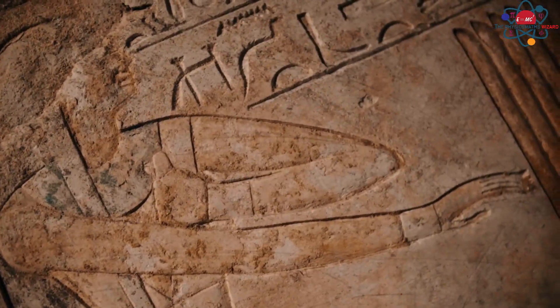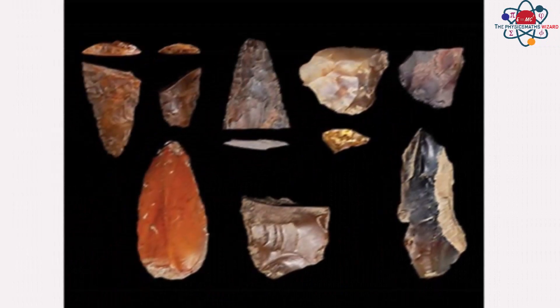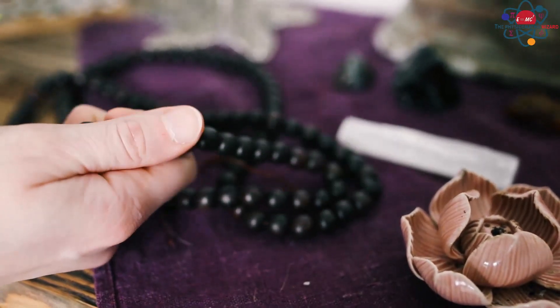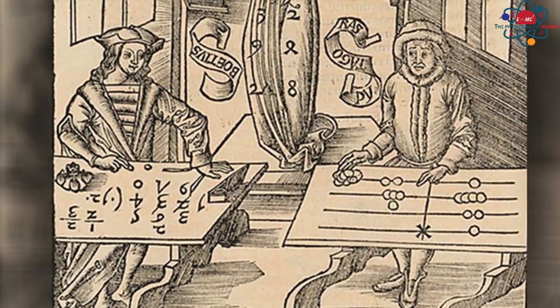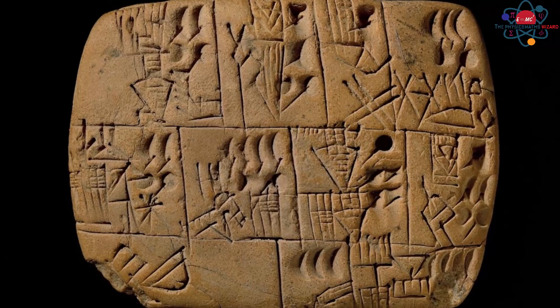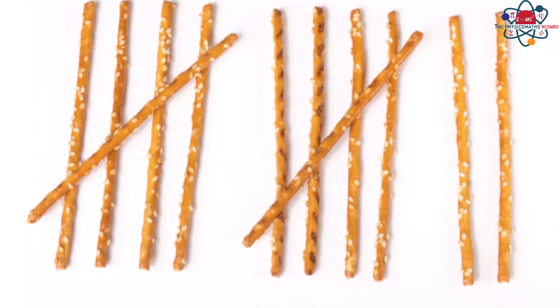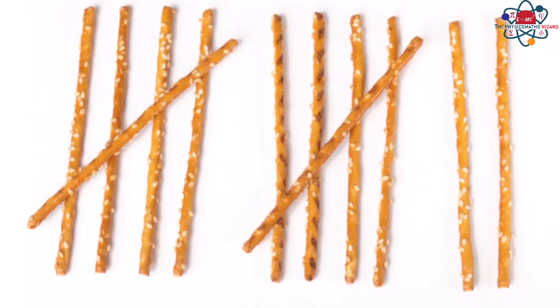From the earliest civilizations, humans have recognized the need to count and quantify objects. From historical findings, we know that the Egyptians, Mesopotamians, and a few other ancient cultures developed numerical systems that laid the foundation for modern mathematics. And because counting and quantifying objects was one of the earliest problems in society, counting numbers — or natural numbers as we sometimes call them — were the first practical numbers to be invented.